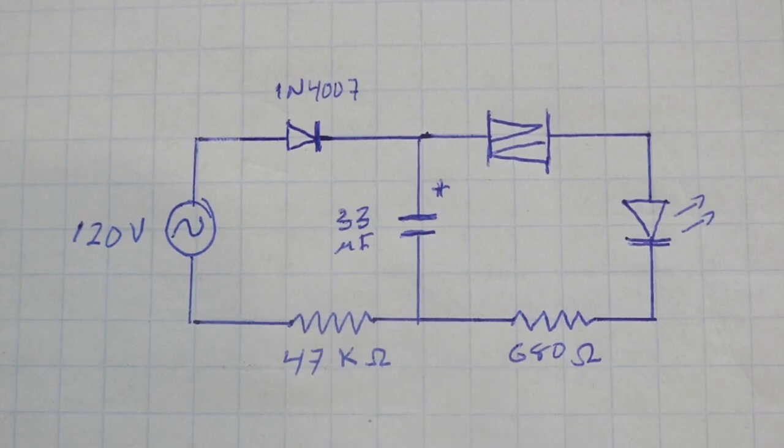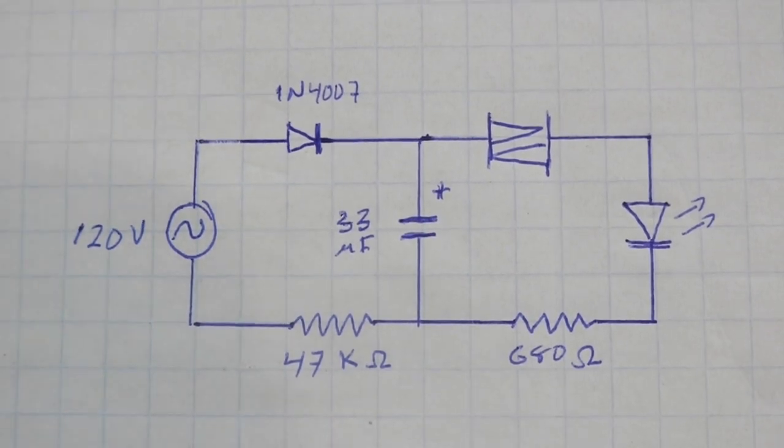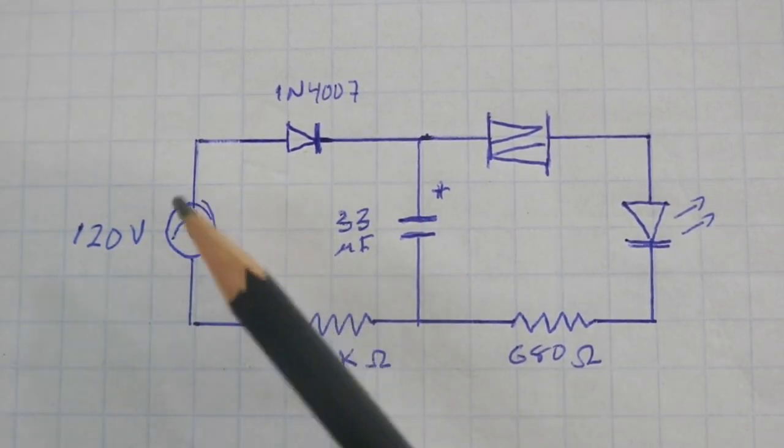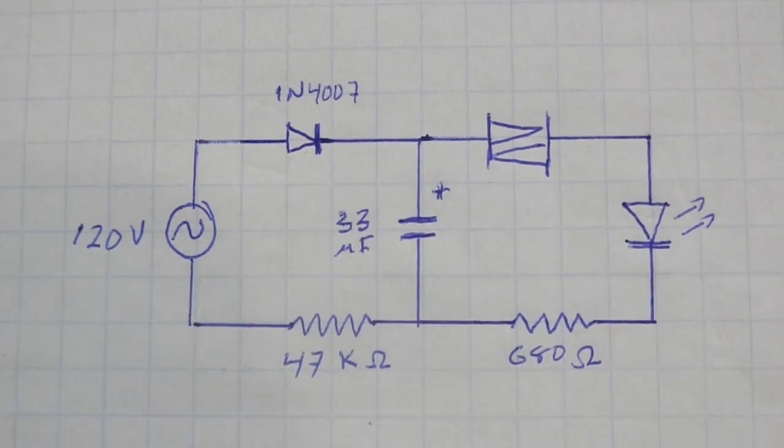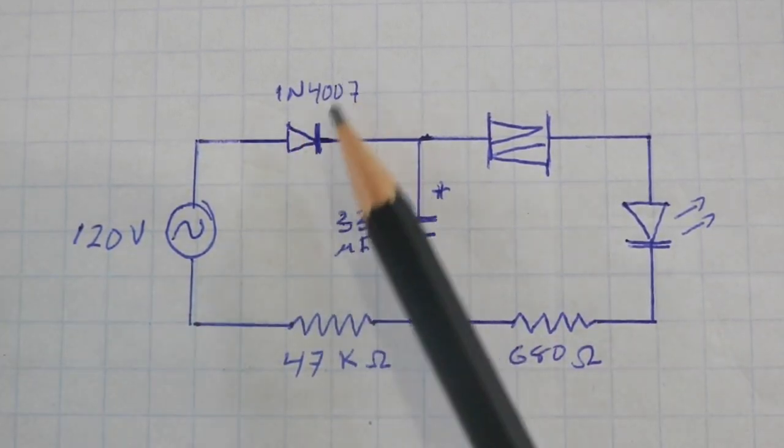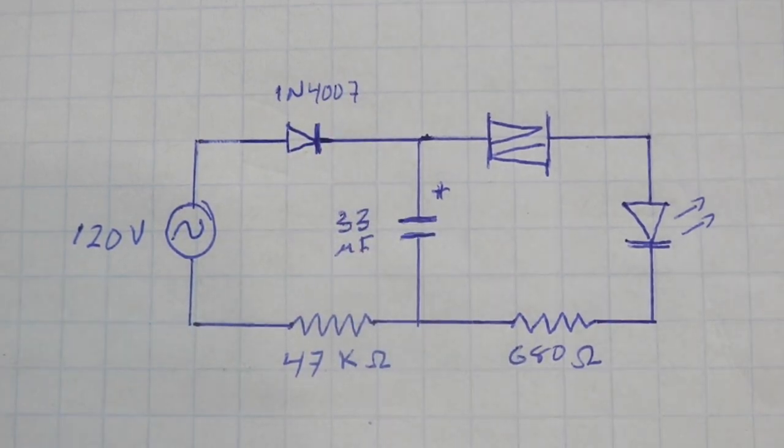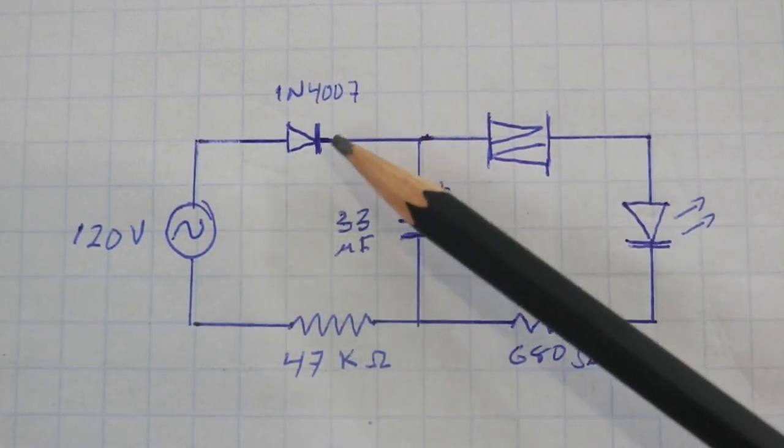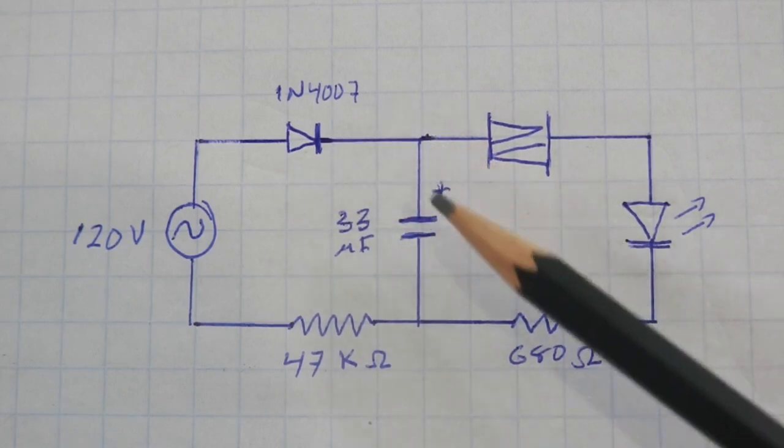Here is the circuit. Let's see how it works. As you can see, it is connected to mains 120 volts AC, and since here we have a diode, the current is rectified and we will have DC flowing through the capacitor and this resistor.